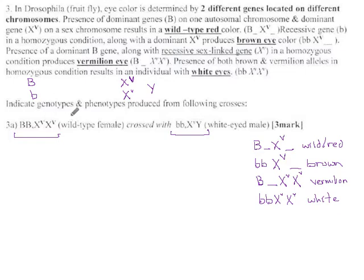Well, this is a great mom because she only has one type of egg she can pass on: big B, that's all she has, and X big V, that's all she has. Fairly straightforward.